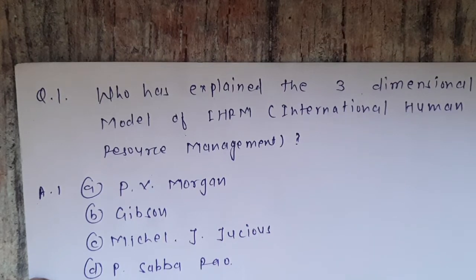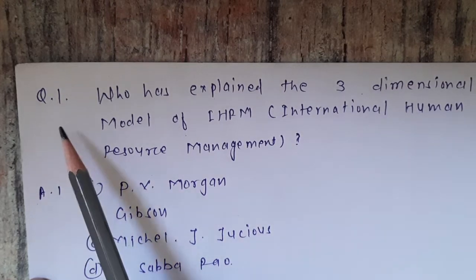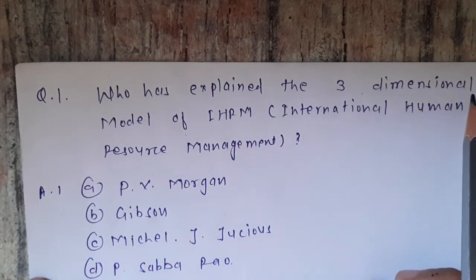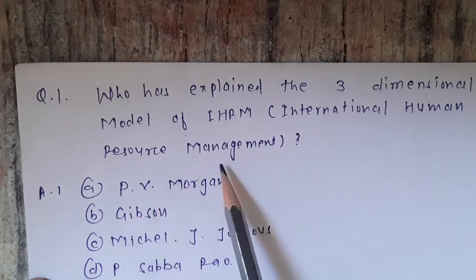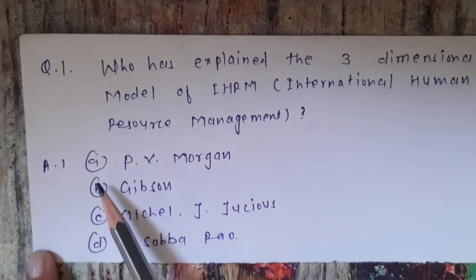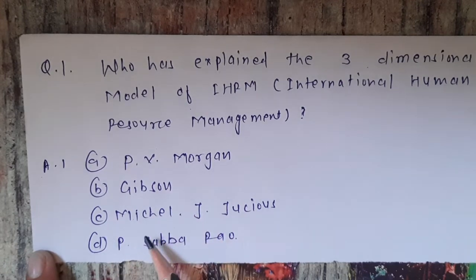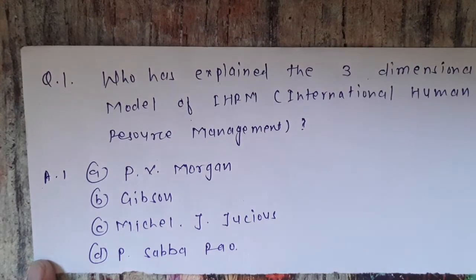Hello friends, welcome to my channel Commerce Knowledge. In this video we see the MCQ of Unit 1 HRM. Question one: who has explained the three-dimensional model of IHMR (International Human Resource Management)? Options are: A) PB Morgan, B) Gibson, C) Michael J Jusis, D) PB Sabah Rao. The correct option is A) PB Morgan.